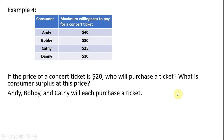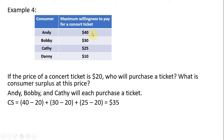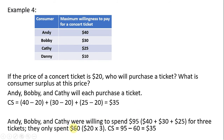What is the consumer surplus in this market at a price of $20? Andy gets $20 of consumer surplus ($40 minus $20). Bobby gets $10 ($30 minus $20). Kathy gets $5 ($25 minus $20). Adding that all up, the total consumer surplus in this market is $35. Andy, Bobby, and Kathy were willing to spend $95 on these three tickets ($40 + $30 + $25), but they only spent $60 — three tickets at $20 each. So $95 minus $60 is another way of arriving at $35. Notice the consumer surplus is not split equally among the three consumers.